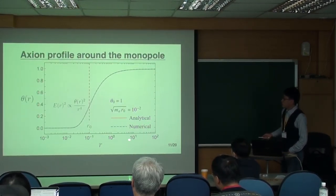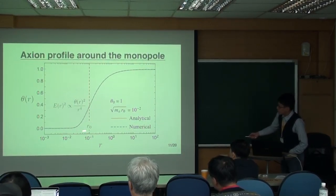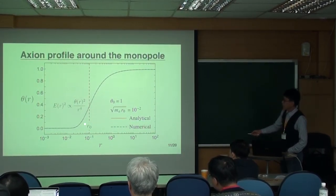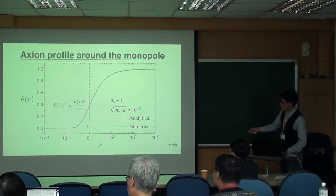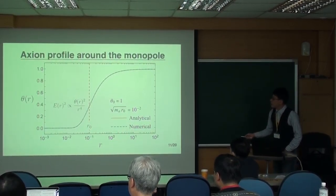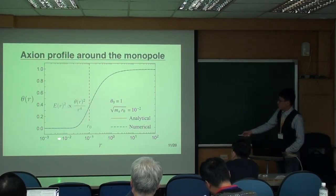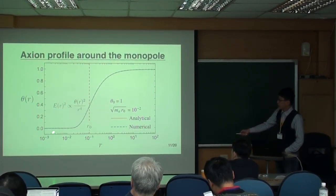So here's our numerical result. As you can see, this blue dashed line is agreeing with the... I mean, our analytic solution is agreeing with the numerical integration. So again, the x-axis is the distance away from the monopole. The monopole is located here.